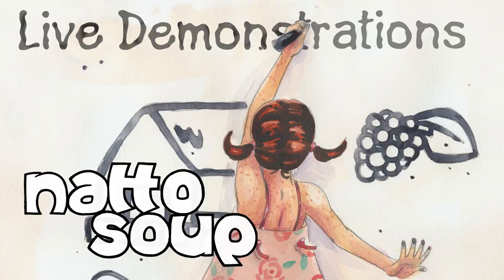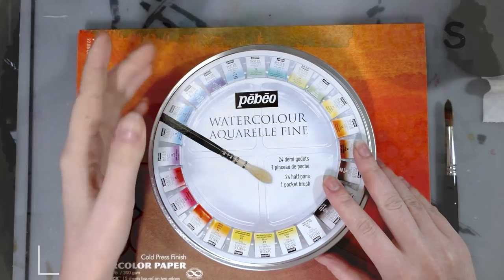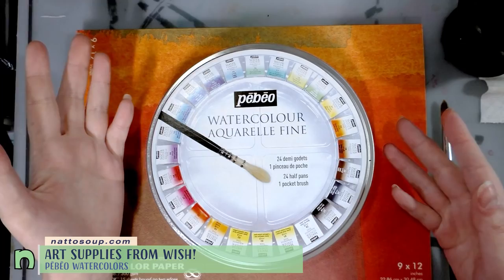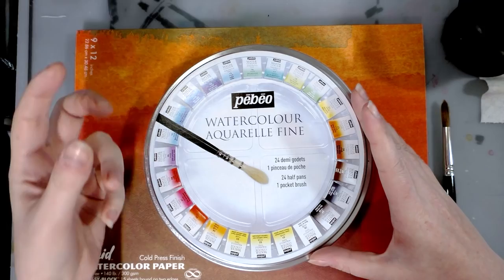I found these Pabillo watercolors on Wish and Pabillo is an art supply company made in France. I didn't realize they made watercolors. I know they make masking fluid, but what I'm most experienced in seeing from Pabillo would be glazing things for ceramics. So I was really intrigued when I saw these watercolors on Wish.